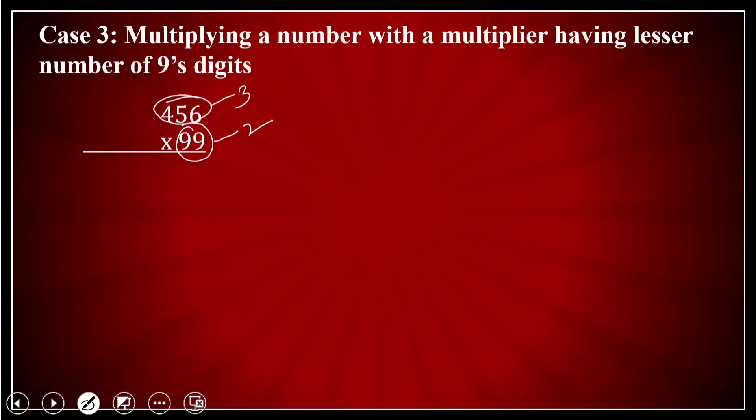Let us try to do the method. How do we multiply? What do I do? The same procedure. I'll just write the two numbers horizontally. 456 on the left side and 99 on the right side.